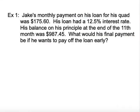In our first example, Jake's monthly payment on his loan for a quad is $175.60 — that's his calculated monthly payment for the life of his loan. His loan had a 12.5% interest rate and his balance on his principal at the end of the 11th month was $987.45. What would his final payment be if he wants to pay off the loan early?